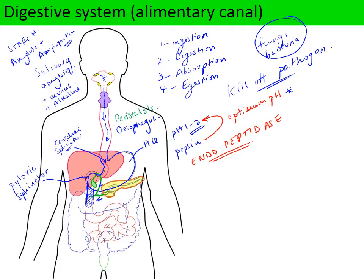The wall of the duodenum has specialized glands called Brunner's glands, which secrete an alkaline mucus. This has two jobs: it neutralizes the acidic bolus of food from the stomach, and it provides a protective layer over the epithelial cells of the duodenum so they are not digested by the digestive enzymes released from the pancreas. The pancreas is an endocrine gland that secretes hormones like insulin, but it also makes digestive enzymes.